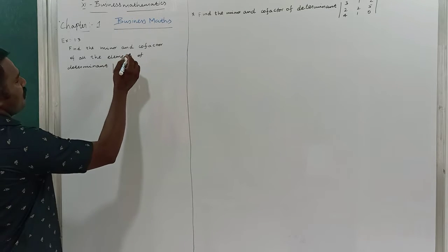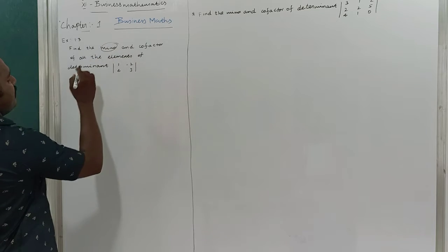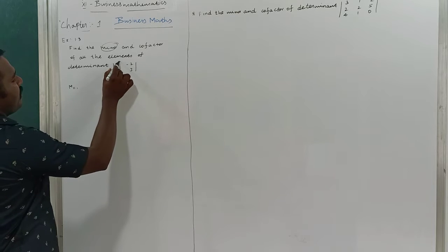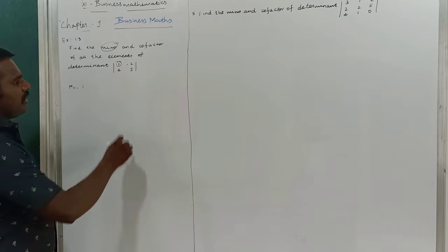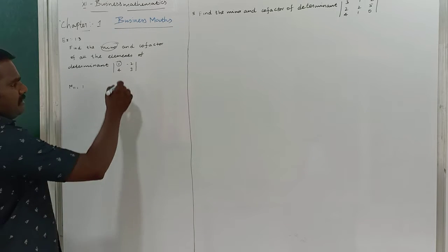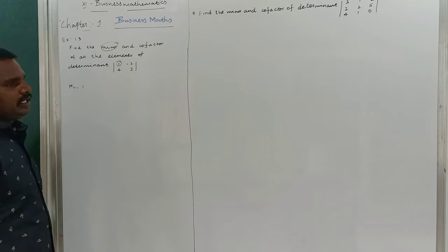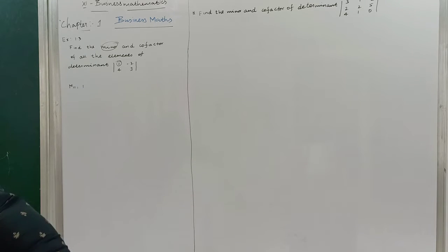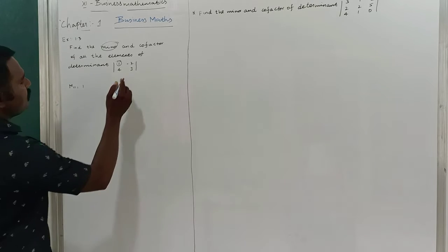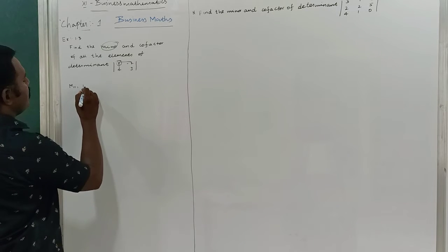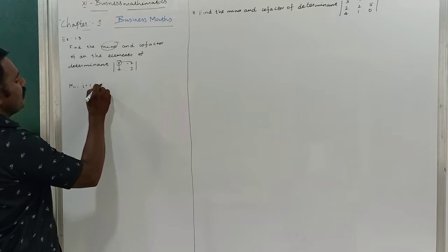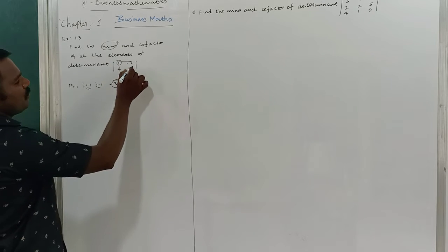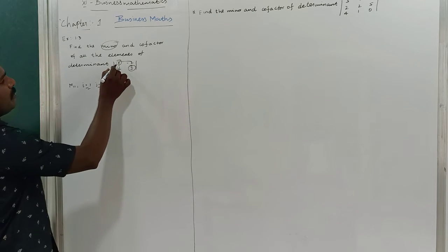First we have to find the minor. M11 — where i equals 1 and j equals 1. I remove that row and column, and the remaining element is 3. So 3 is the minor of M11.